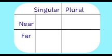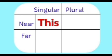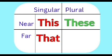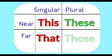Children, look at this box. Always remember that, in singular noun, if a single object is near to us, we use this. And if a single object is far from us, we use that. In plural nouns, if many objects are near to us, we use these. And if many objects are far from us, we use those.